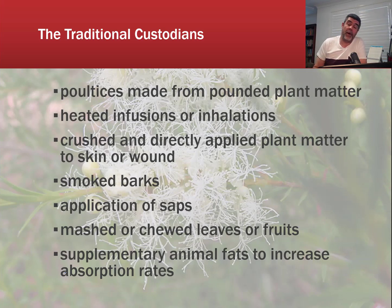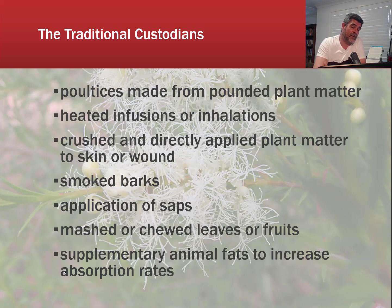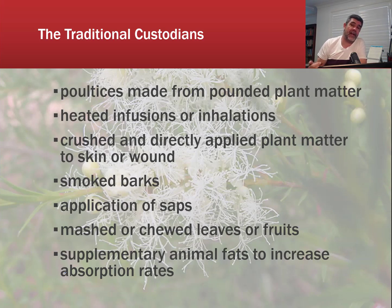These methods can include things like poultices made from pounded plant material, heated infusions or inhalations, crushed and directly applied plant material to skin or to broken wounds, the smoking of barks, the application of saps, mashing or chewing of leaves and fruits, and also the very smart use of supplementary animal fats to increase absorption rates for many of these particular active ingredient chemicals. We're finding so much about what's actually available in our own native flora from valuing the information that the indigenous nations have.